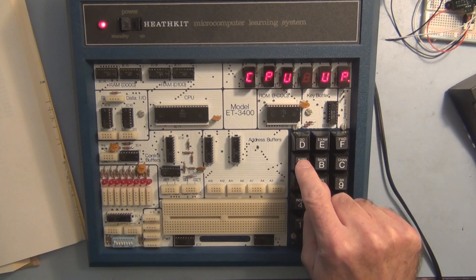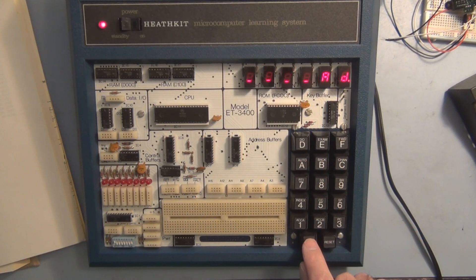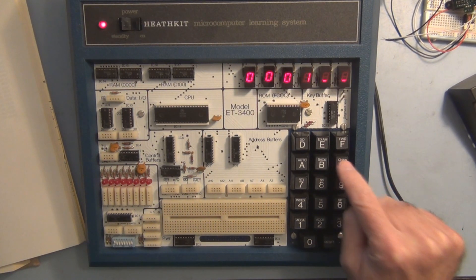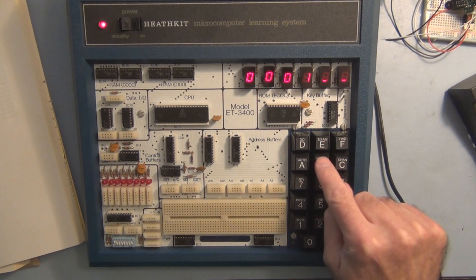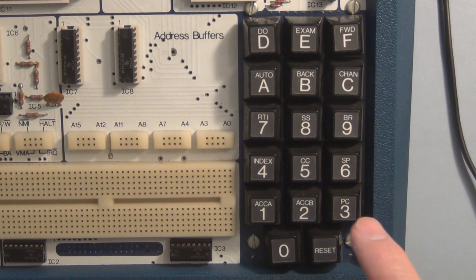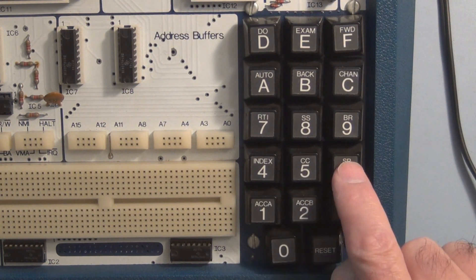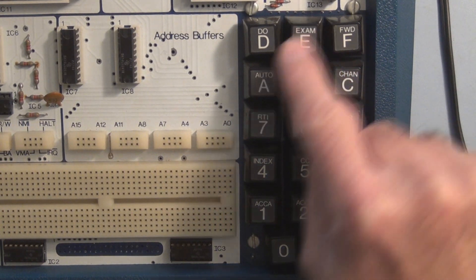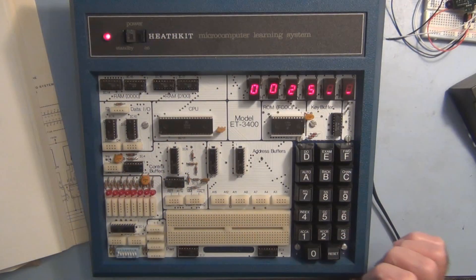Let's see here. Auto. Address starting at 0000. We want to enter FC, BC, and 0F26EA. Okay, let me stop for a minute.